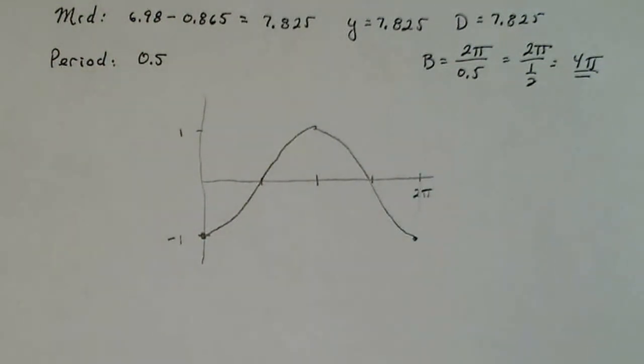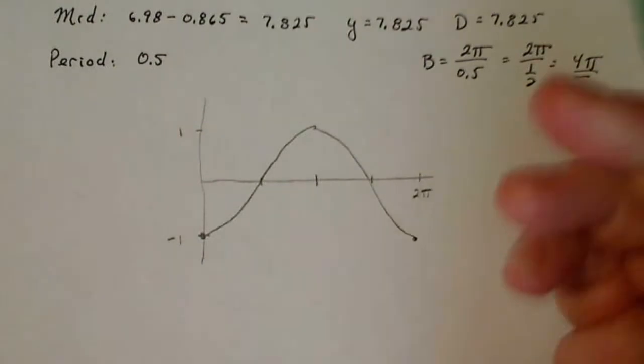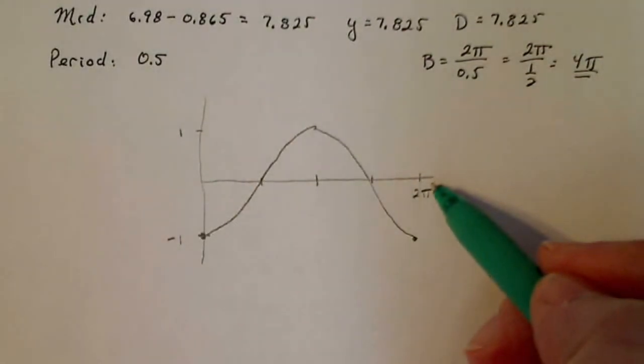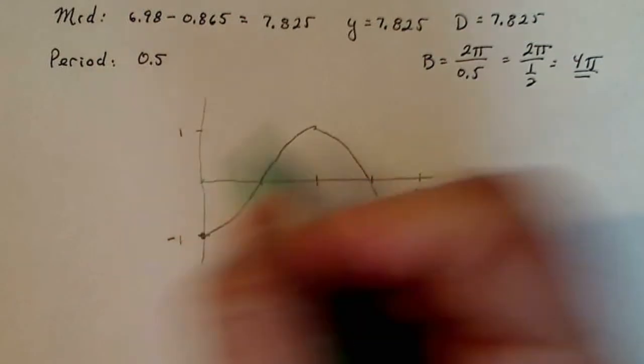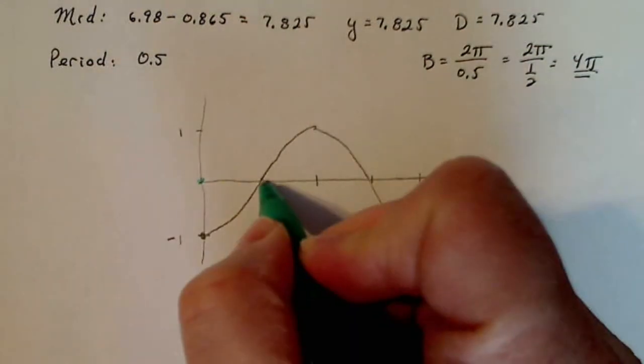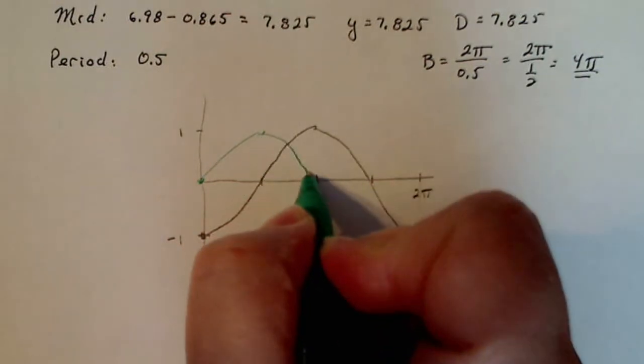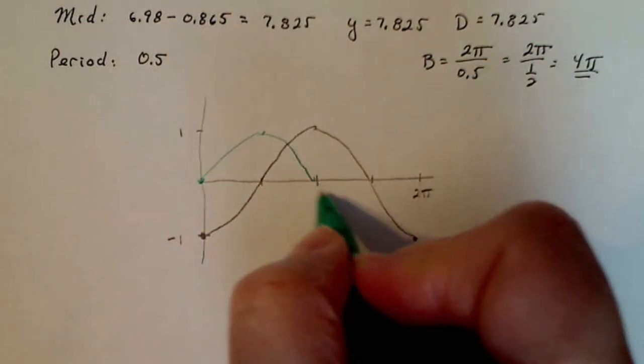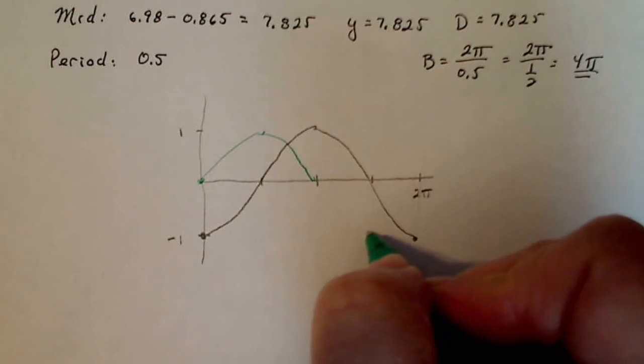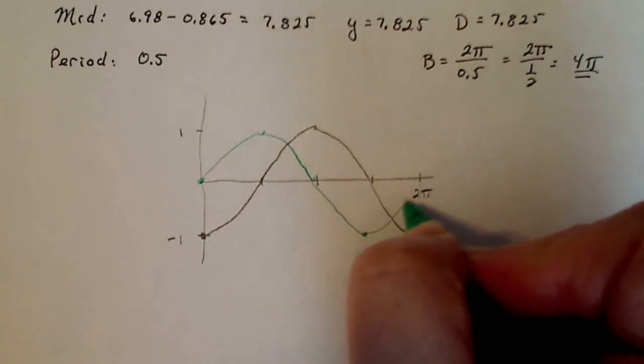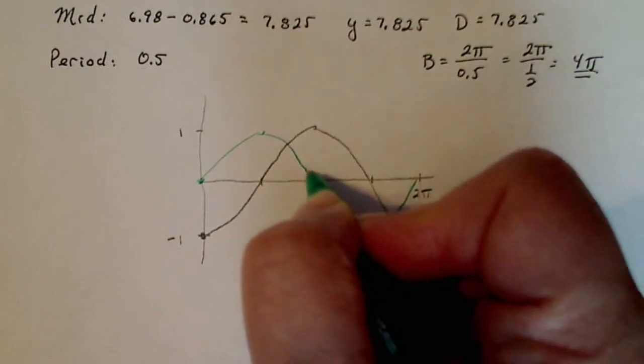Now, a sine wave over that same interval. Let me get a different color here. A sine wave over the same interval is going to divide up the period of 2 pi into fours as well, but it's going to move in a different way. It's going to start at the midline and then go up to the high point. It's going to go down to the next quarter to the axis again. And it's going to go down to the bottom of the amplitude down here. And then it's going to go back up. So there's a typical sine wave over the period from 0 to 2 pi.